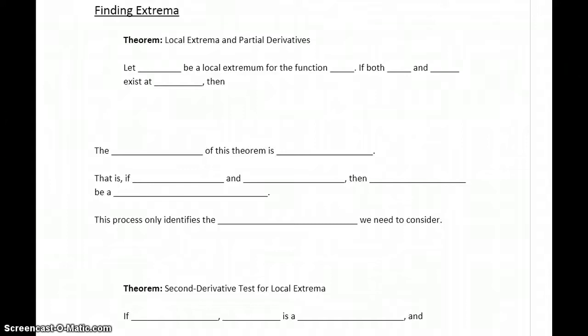We're going to start off with a theorem that tells us that if we have some point f(a,b), and that point is a local extremum, meaning it is a maximum or minimum for the function f(x,y). So we're assuming we already found this point, or somehow know this point to be an extremum.